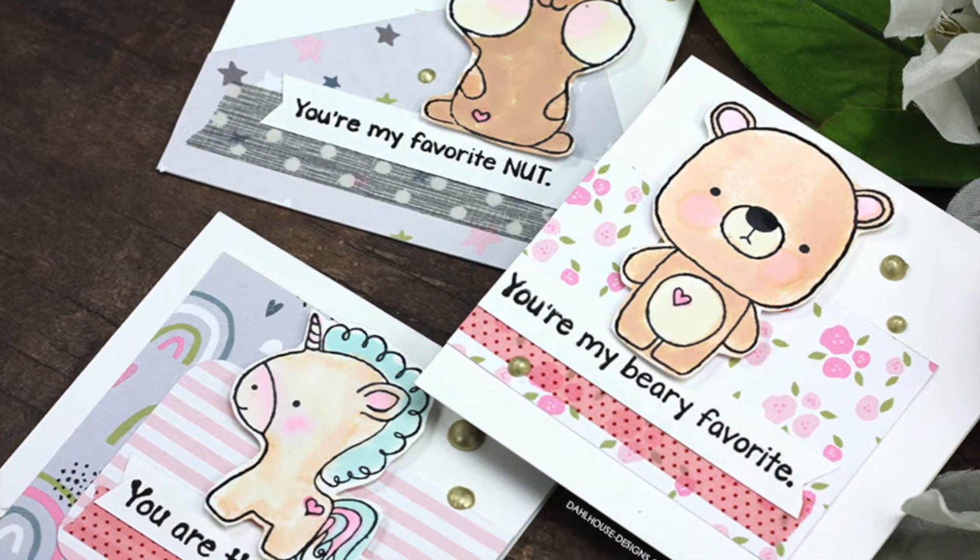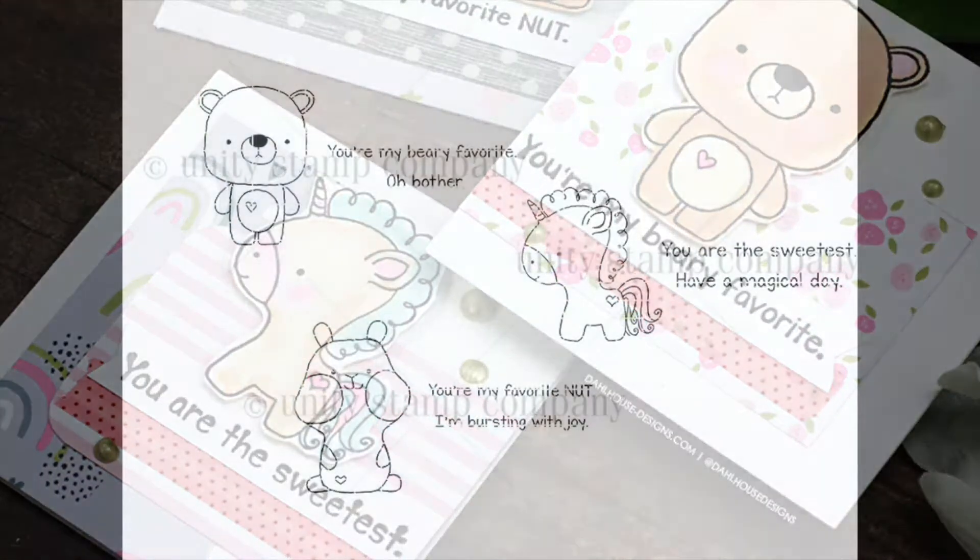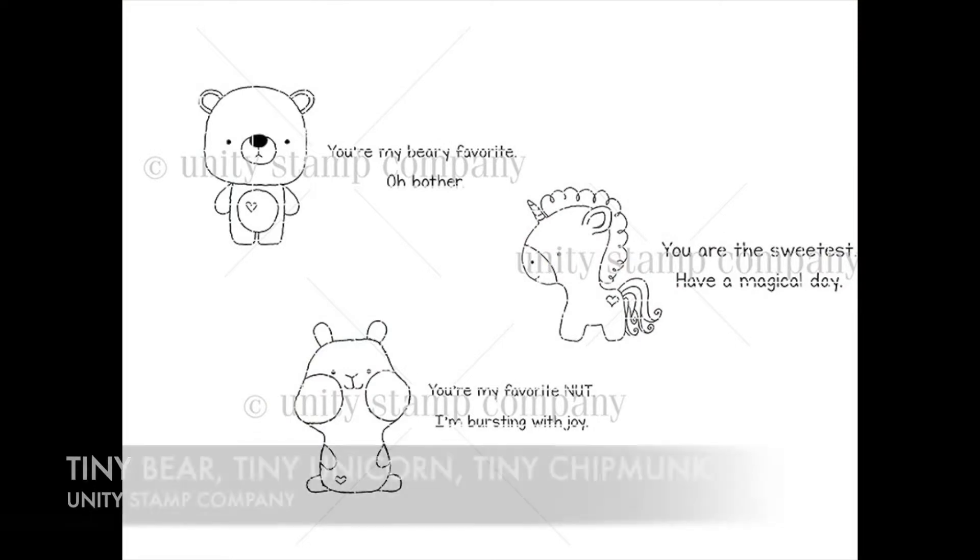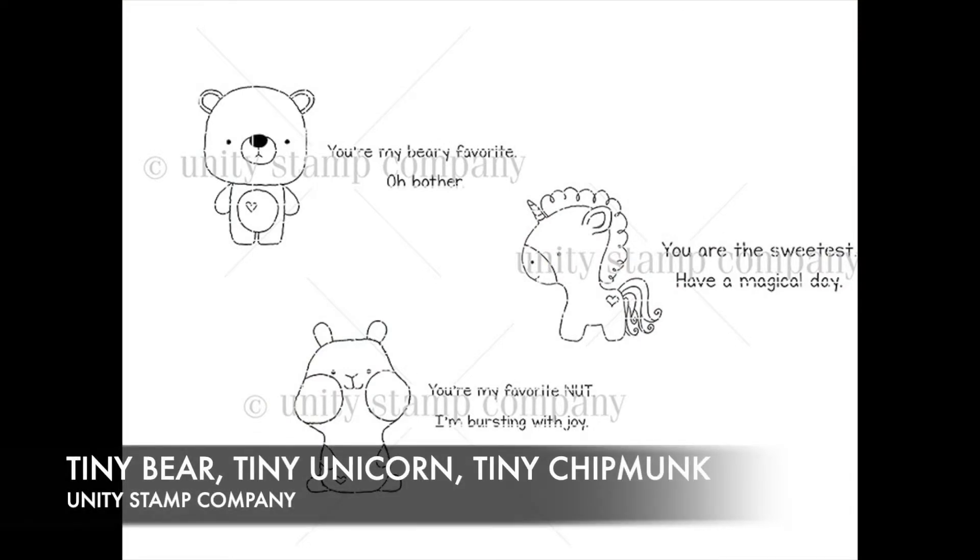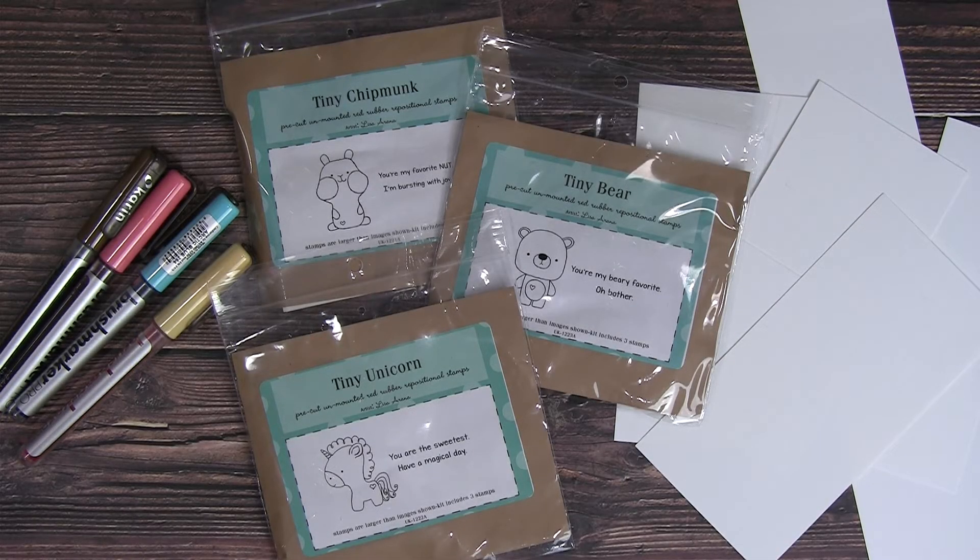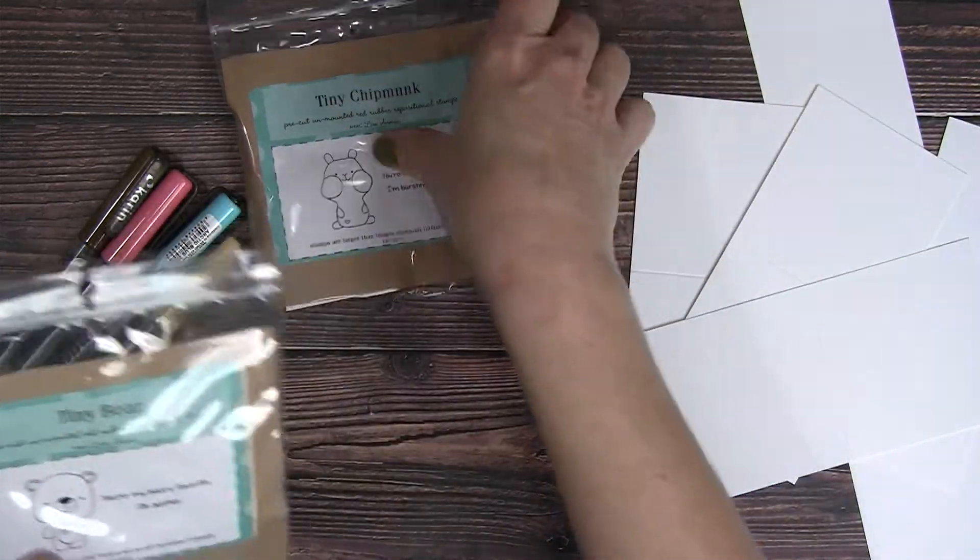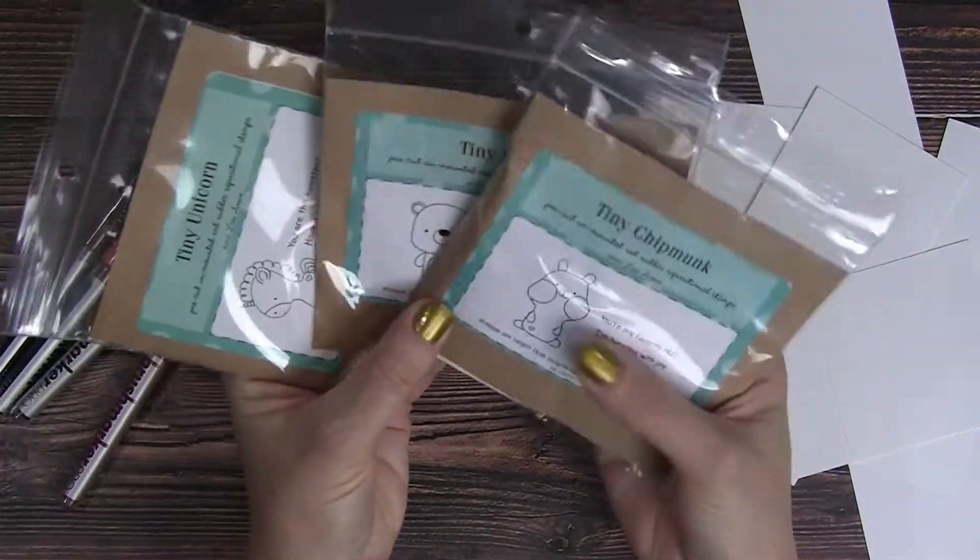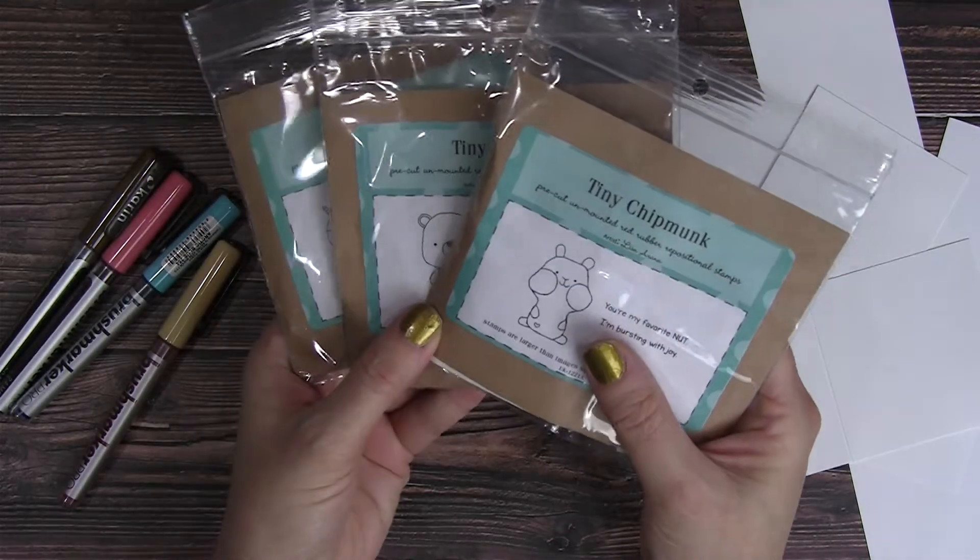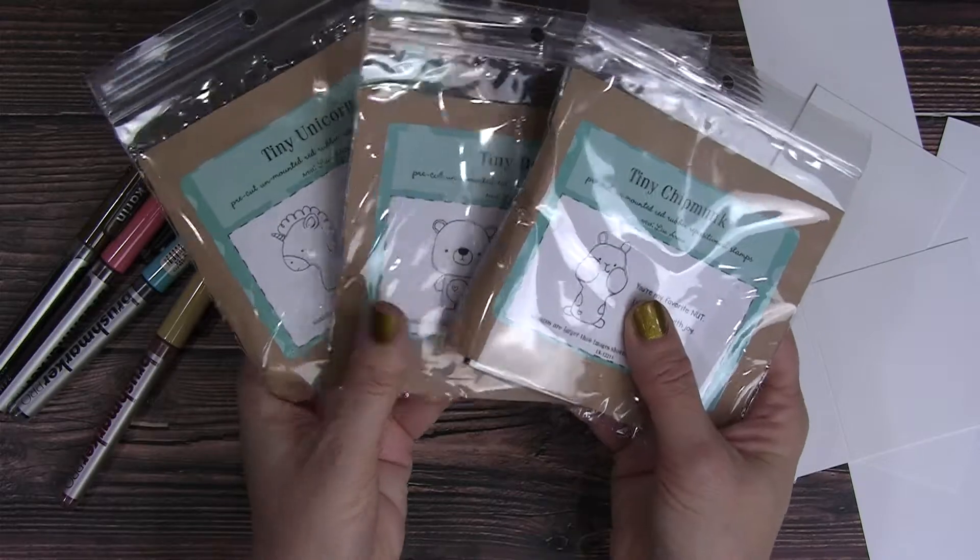I'm featuring all these cute tiny animals from Unity Stamp Company. They're just too darn cute and perfect for your little Valentines. I'm using the tiny bear, the tiny unicorn, and tiny chipmunk. They're just the perfect size and come with some really cute sentiments as well.